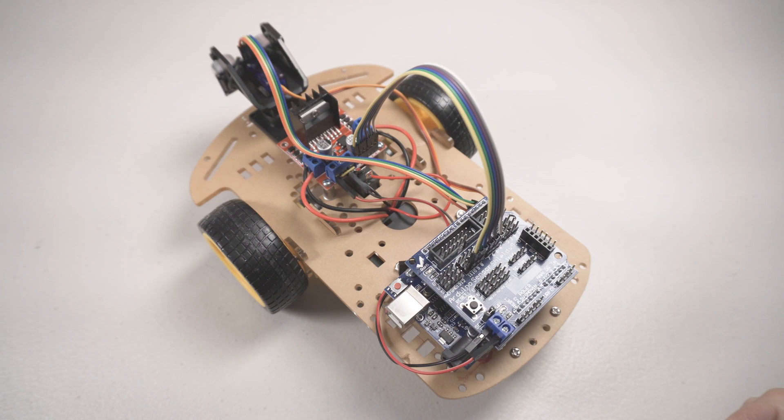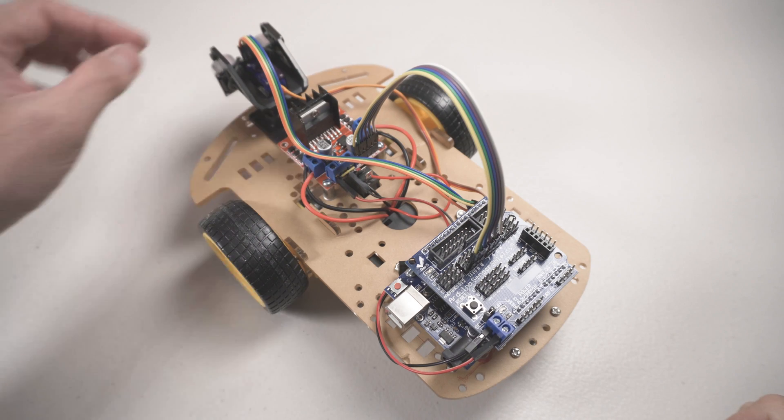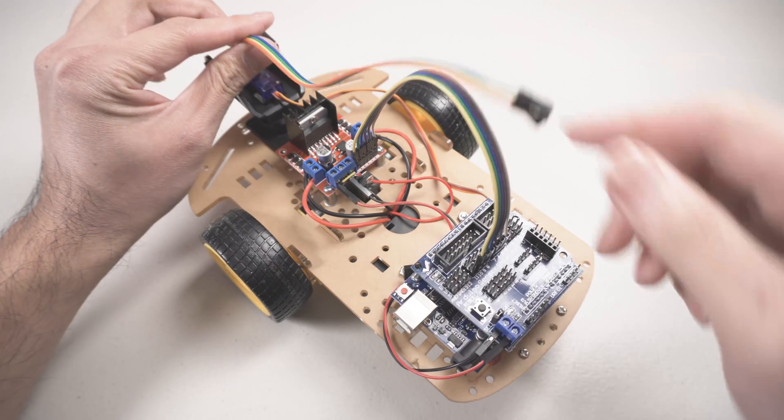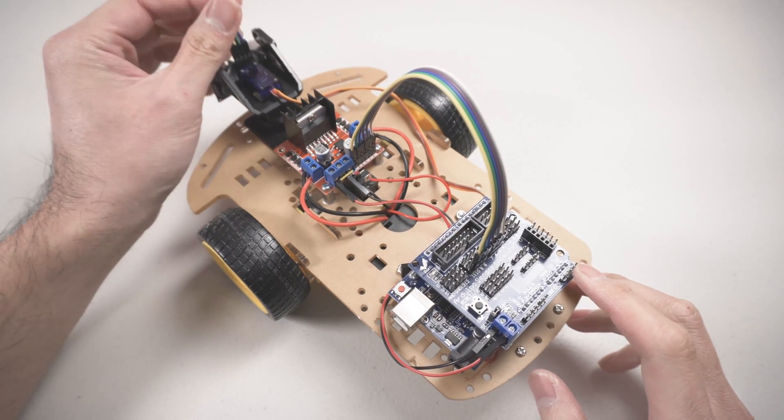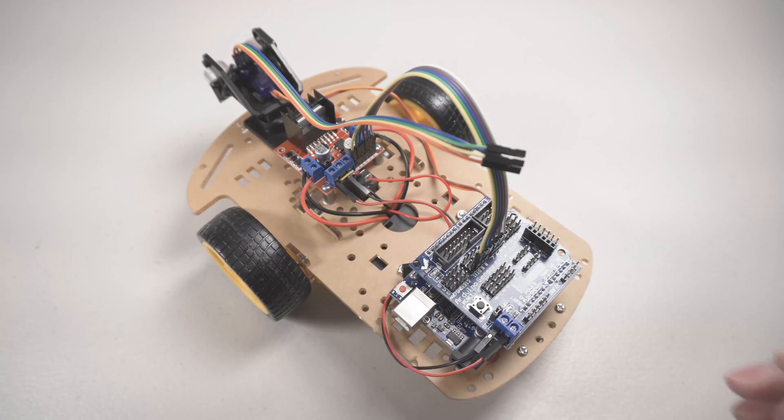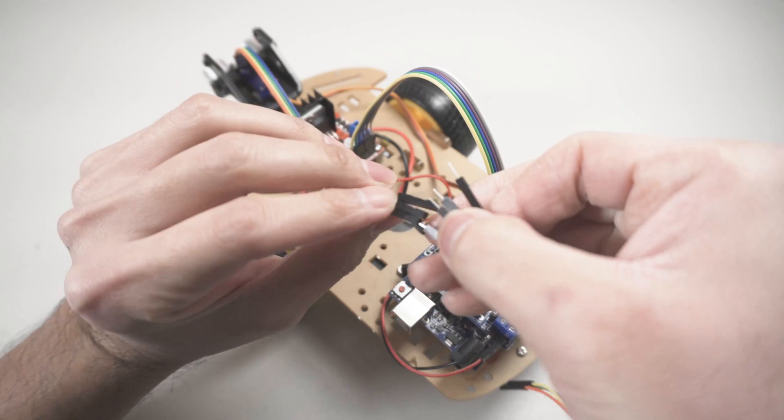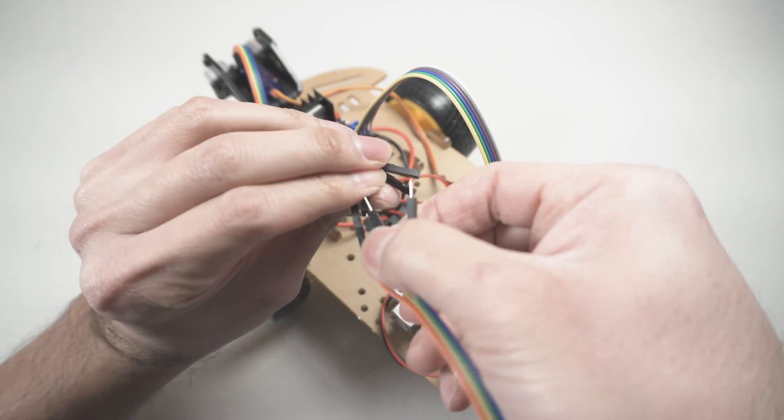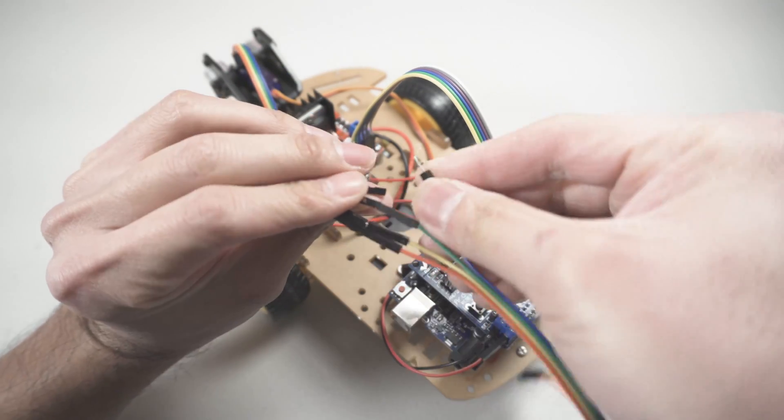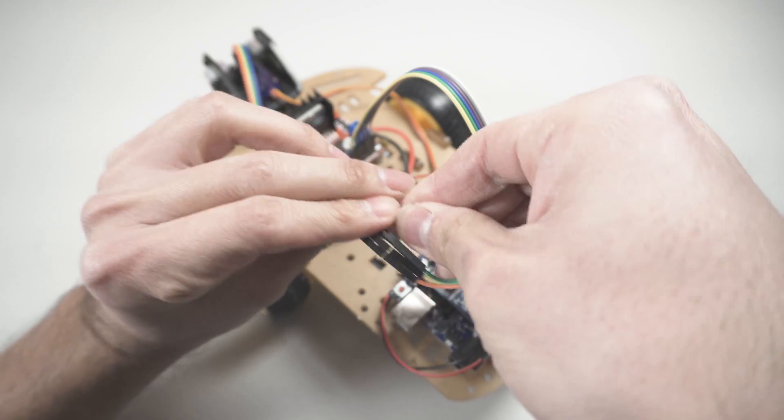The last bits to be connected are the ultrasonic sensor and the servo. The sensor actually needs to be connected to the very far back of the sensor shield, right on the bottom right corner. I have to use two sets of jumpers and feed them under the Arduino to avoid long wires dangling.